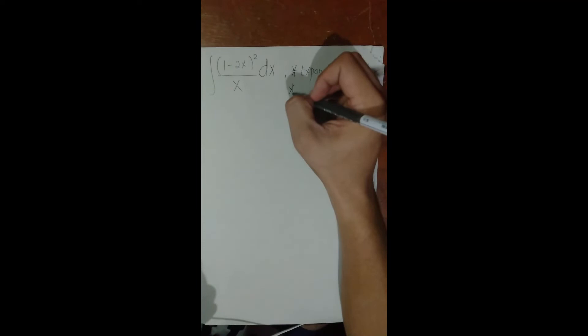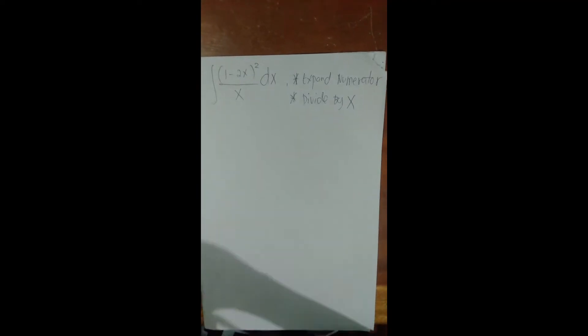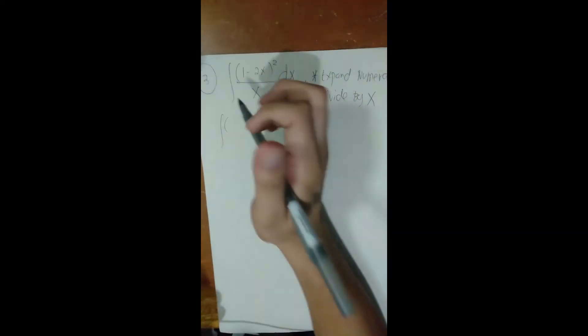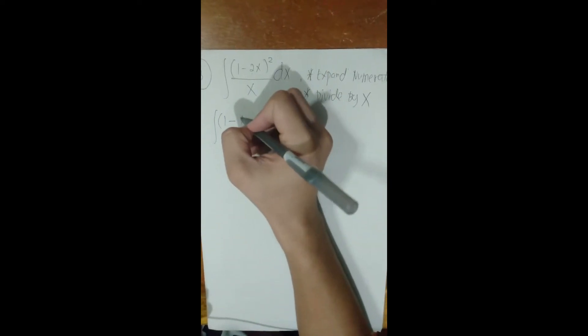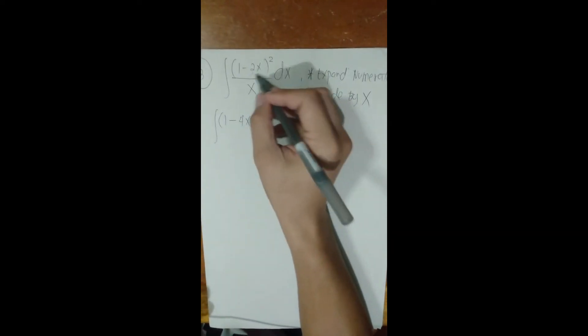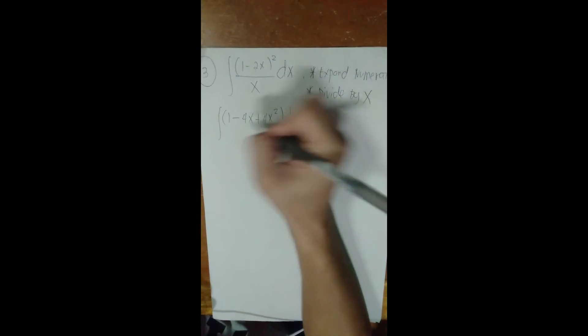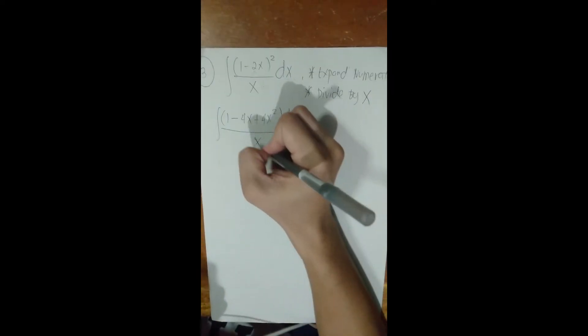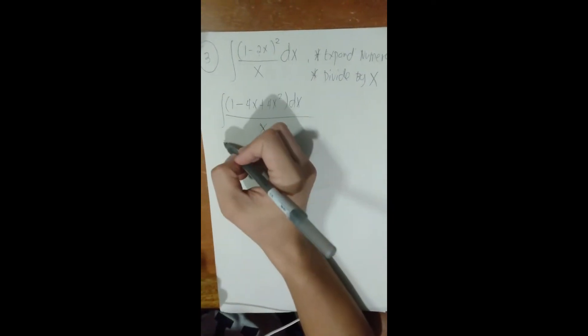Expanding the numerator using binomial expansion: (1 − 2x)² = 1 − 2(1)(2x) + (2x)² = 1 − 4x + 4x². So the integral becomes the integral of (1 − 4x + 4x²) / x dx.